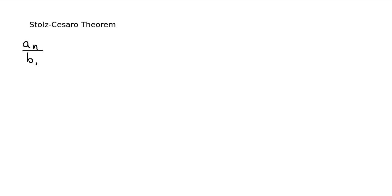Hello everybody. In this video I'm going to be talking about the Stoltz-Cesàro theorem. It has to do with the limits of ratios of sequences. Basically, if we're trying to find the limit as n goes to infinity of the ratio of two sequences a_n and b_n, the Stoltz-Cesàro theorem says we should look at a_{n+1} minus a_n over b_{n+1} minus b_n instead.